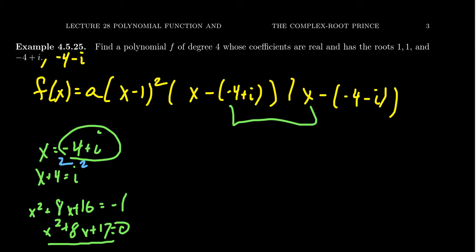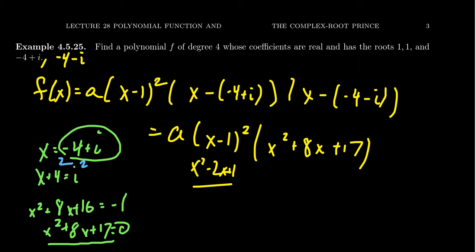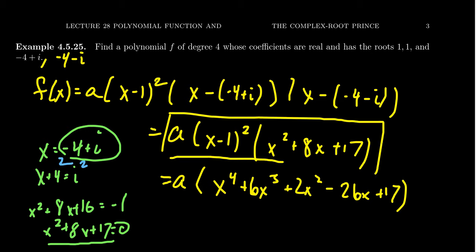And so our polynomial looks like a times x minus 1 squared times x squared plus 8x plus 17, which we could foil that out a little bit farther if we wanted to. I don't really care to do that right now. I mean, you can, of course. Like x minus 1 squared, that would foil out to be x squared minus 2x plus 1. And if you foil this by that, you end up with the following. This would simplify to be x to the fourth plus 6x cubed plus 2x squared minus 26x plus 17. I'm just looking off my cheat sheet right now. I didn't do it all in my head. But you can multiply that out and get that. But the point is, at this stage, you could see that the coefficients were real. That the complex conjugates, the pairs, they're going to cancel out their imaginary parts and you're going to get real polynomials. So real polynomials will always come in these conjugate pairs. That's an important observation to make here.